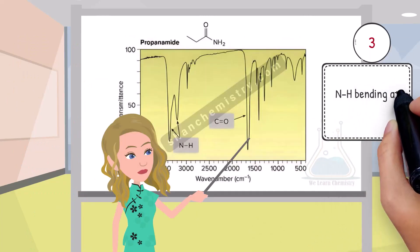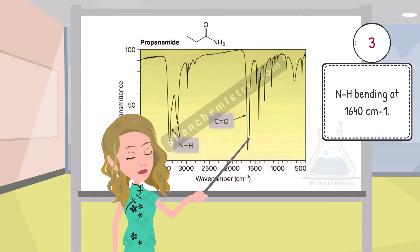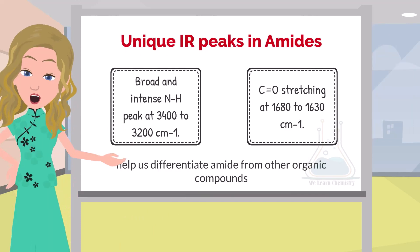The N-H bending absorptions in amides are typically observed around 1640 per cm in the infrared spectrum. However, the carbonyl stretching peak